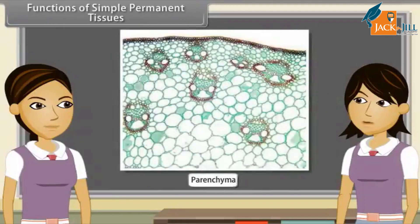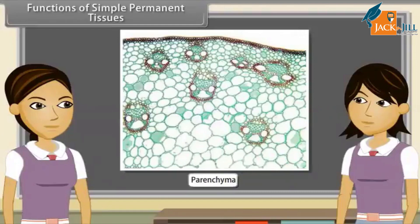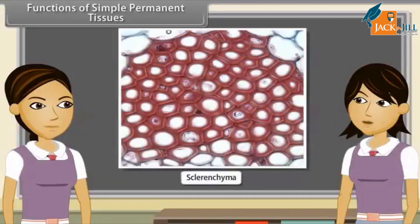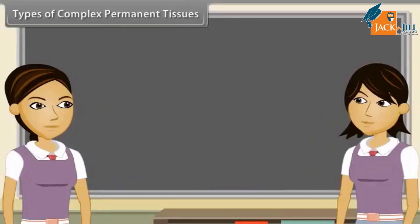Parenchyma serves as a packaging tissue to fill the spaces between other tissues and maintain the shape of the plant. Due to its turgid cells, it also stores and assimilates food. Transport of material occurs through cells or cell walls of parenchyma, and their intercellular spaces allow gaseous exchange. They also store waste products of plants like tannin, gum, resins, etc. Collenchyma is a mechanical tissue, so it provides mechanical support and elasticity. Sclerenchyma is mainly mechanical and protective in function — it gives strength, rigidity, flexibility and elasticity to the plant body, enabling it to withstand various strains.